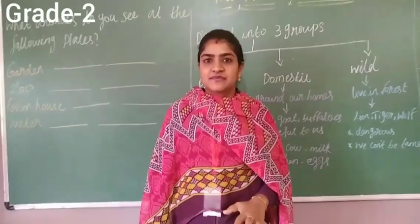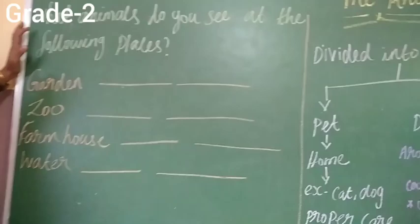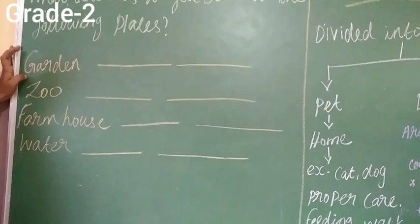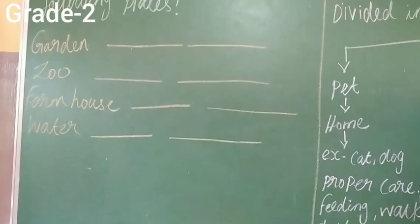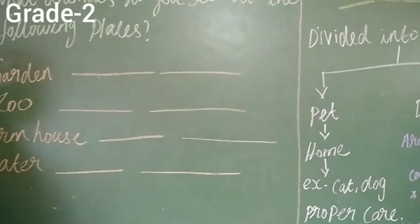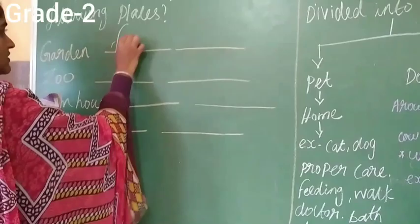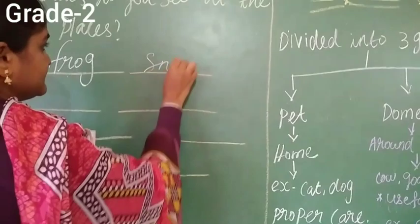In the textbook they have given the question: what animals do you see at the following places? The places given are garden, zoo, farmhouse, and water. We have to write those animals. In the garden we can see frog and snake.